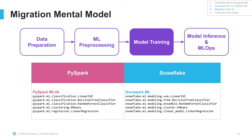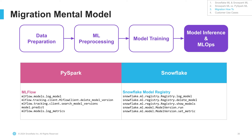For model training, most functionalities available in MLlib are also available in SnowparkML — things like linear SVM, decision tree classifier, random forest, K-means, linear regression — all the same functionalities, but they work like sklearn. For MLOps, people coming from the PySpark world tend to use MLflow. Within Snowflake we use Snowflake Model Registry, which has very much the same functionalities — log model, delete a model version, search model versions, prediction, log metrics — all available in Snowflake Model Registry, with the advantage that the UI is right there where your data and models live.